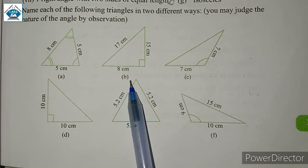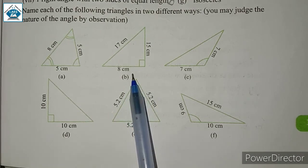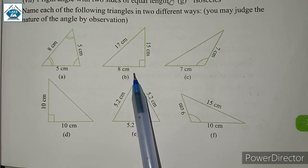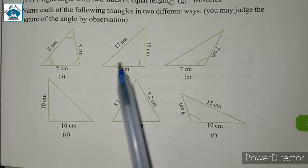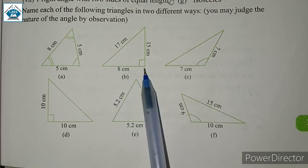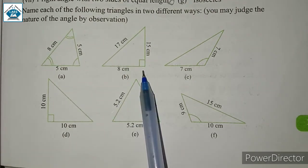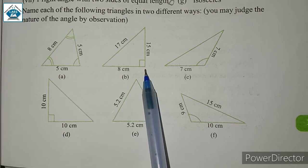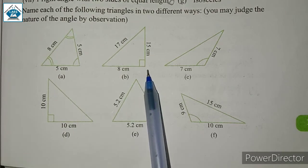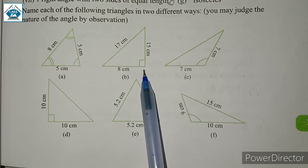So, the two different ways of naming this triangle: based on sides, we can call it a scalene triangle; and based on angle, we can call it a right angled triangle.